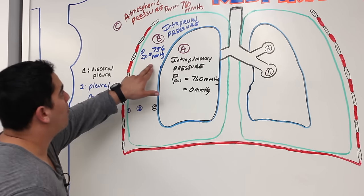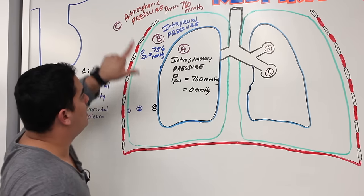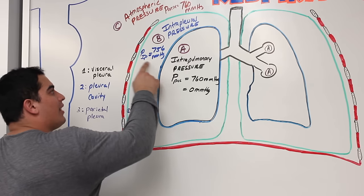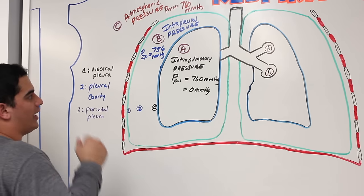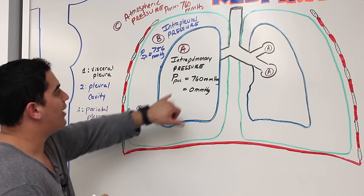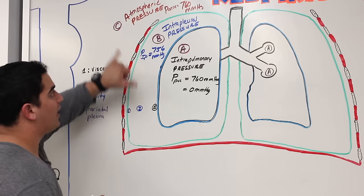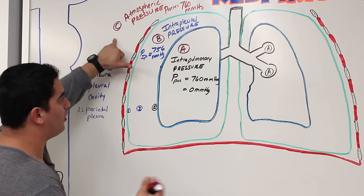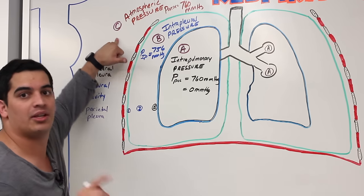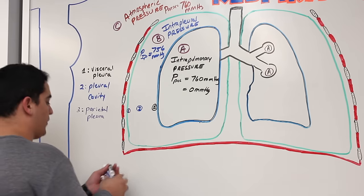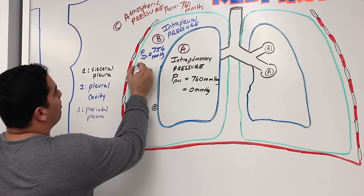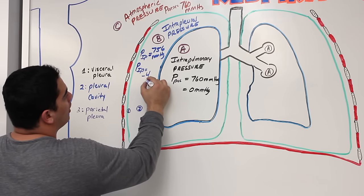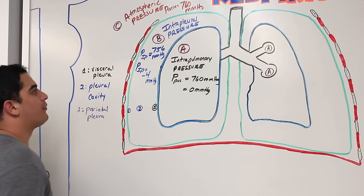Now comparing intrapleural pressure to atmospheric: if I subtract intrapleural from atmospheric, that's 756 minus 760, which equals negative 4 mmHg. So the intrapleural pressure can also be expressed as negative 4 mmHg. The intrapulmonary pressure is zero, and the intrapleural pressure is negative 4.